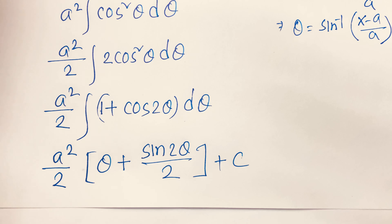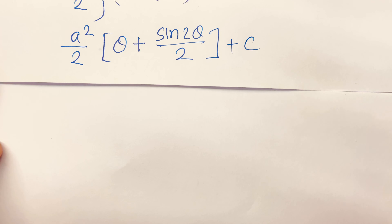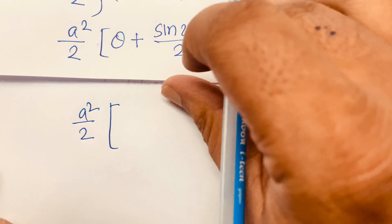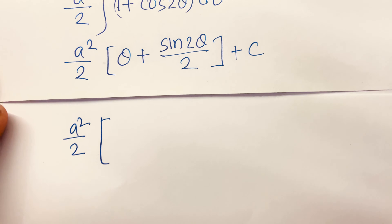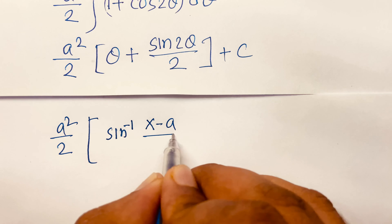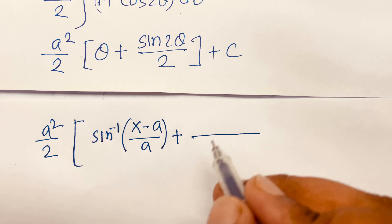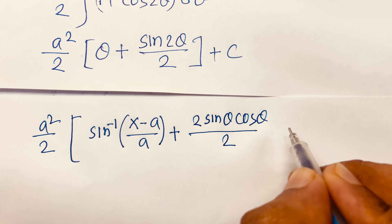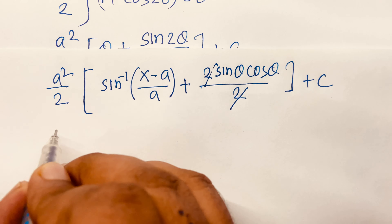This equation becomes a²/2 · [ θ + sin2θ/2 ] + C. Remember that x − a = a sinθ, so sinθ = (x − a)/a, and therefore θ = sin⁻¹((x − a)/a).